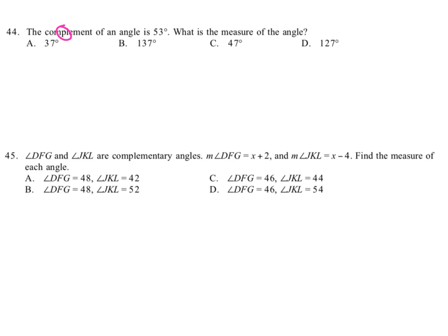So if the complement of an angle is 53 degrees, that means that whatever angle we're looking for adds with 53 to get 90. So you can subtract 53 from 90 to find out what it should be.